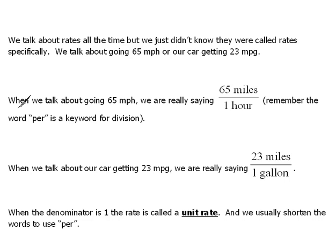If we talk about going 65 miles per hour, in order to write that properly in mathematical format, we would write it as 65 miles over one hour. If you'll remember from things that we've done before, the word 'per' is a key word for division. So when we say 65 miles per hour, we're really saying we go 65 miles in one hour. It's a comparison, or a rate, because the units are different. If we talk about our car getting gas mileage, saying 23 miles per gallon, we're really saying 23 miles per one gallon of gasoline.